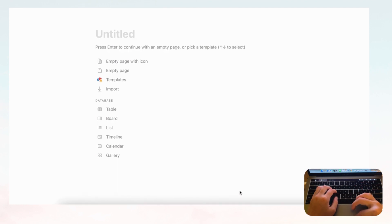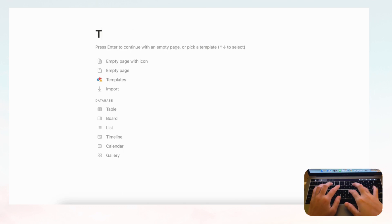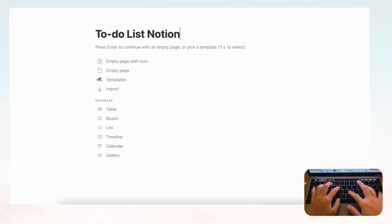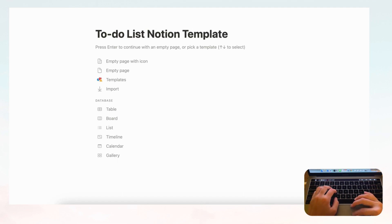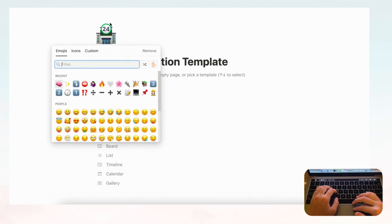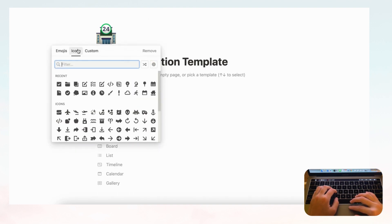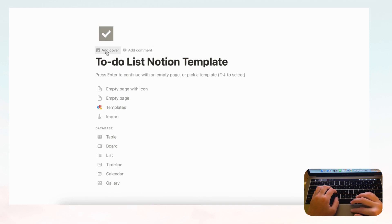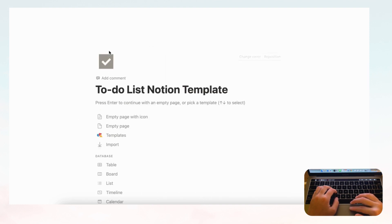The first thing you'll want to do is open an empty Notion page and title it — let's go with 'To-Do List Notion Template.' We're going to add an icon; let's go with a checkmark in gray. Then let's add a cover photo.